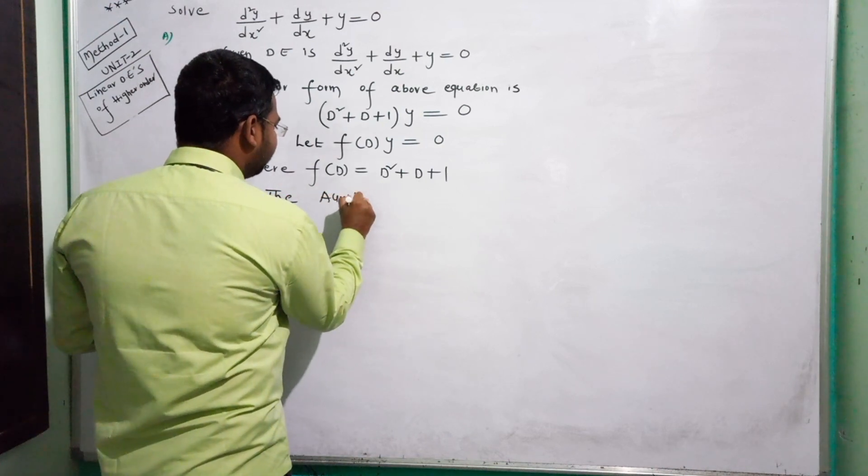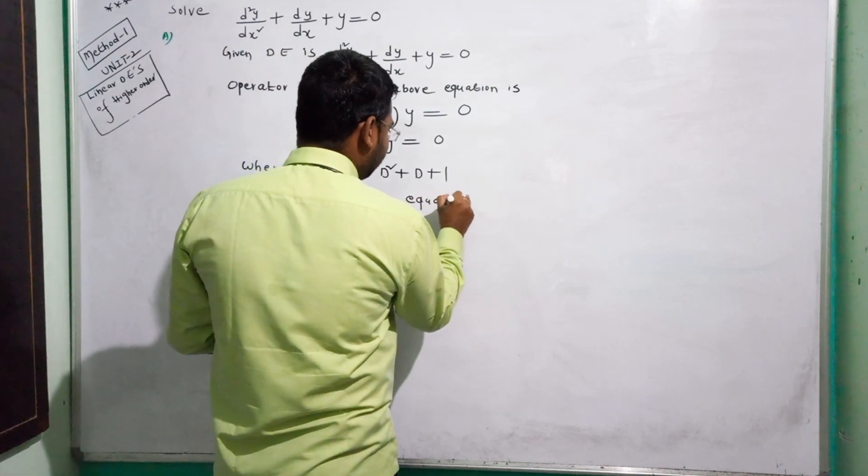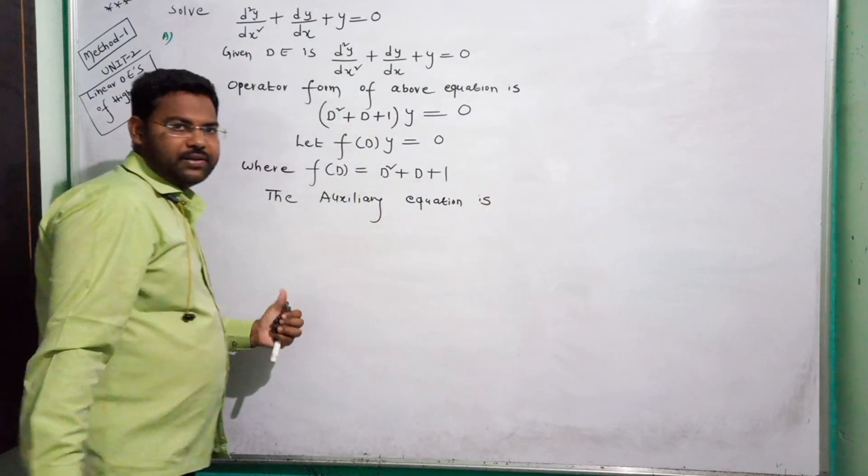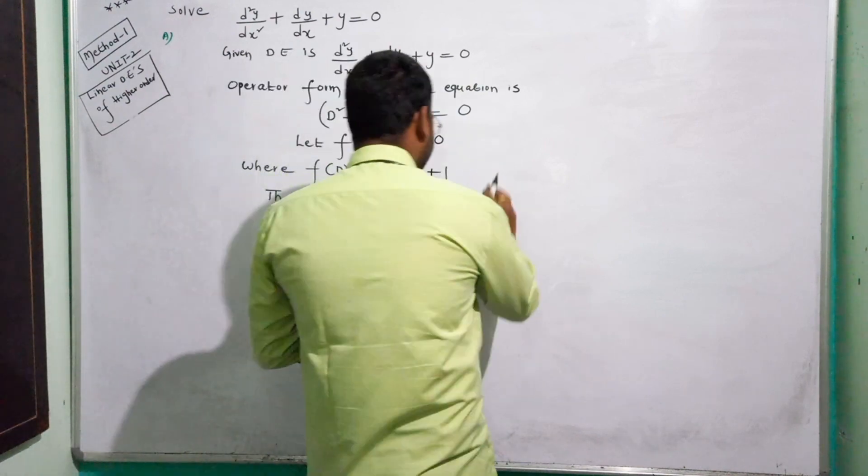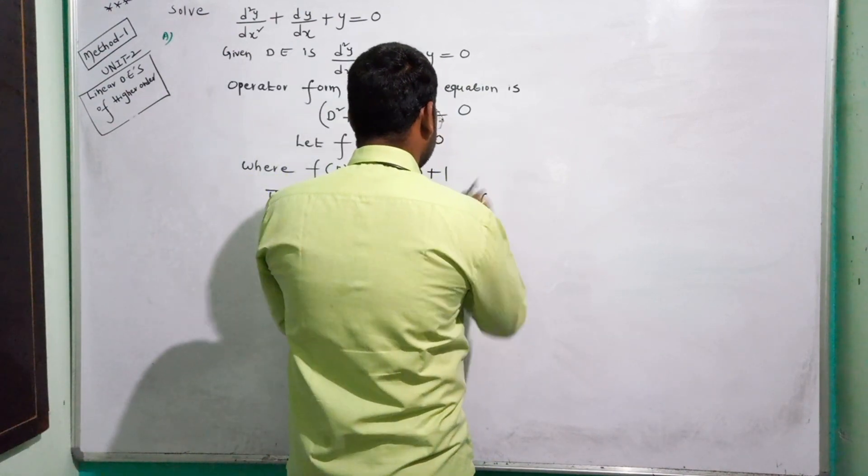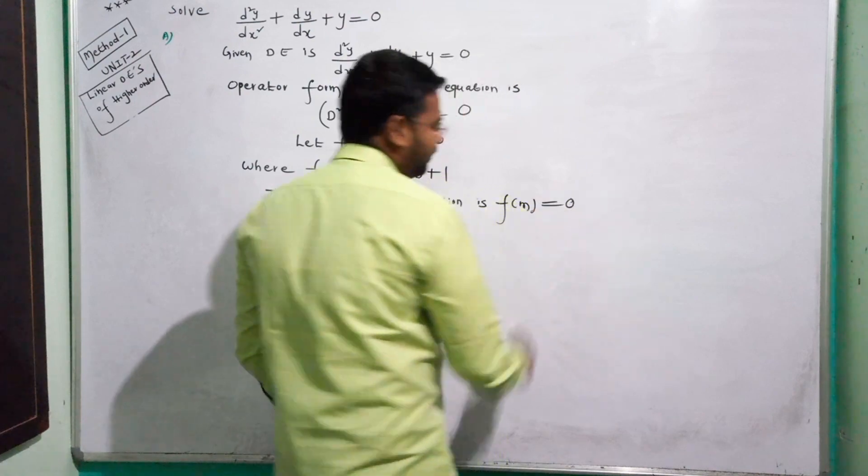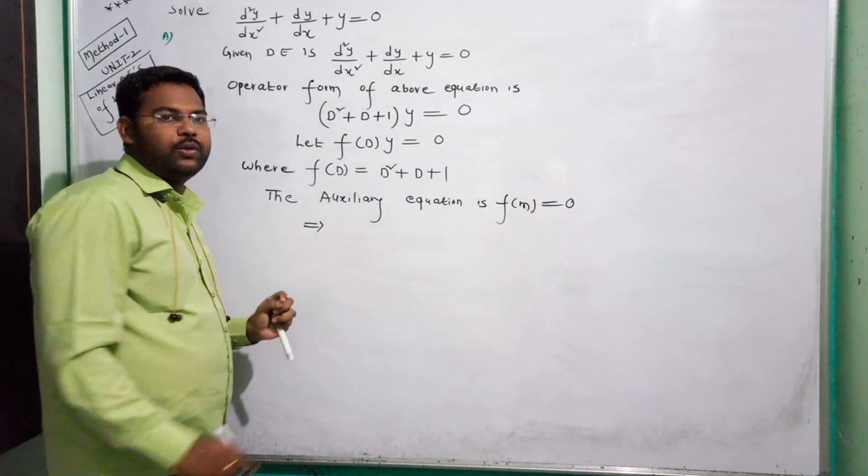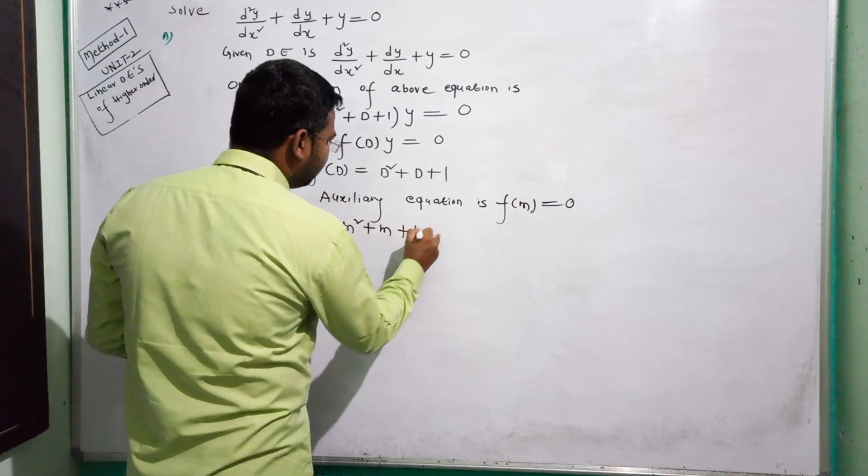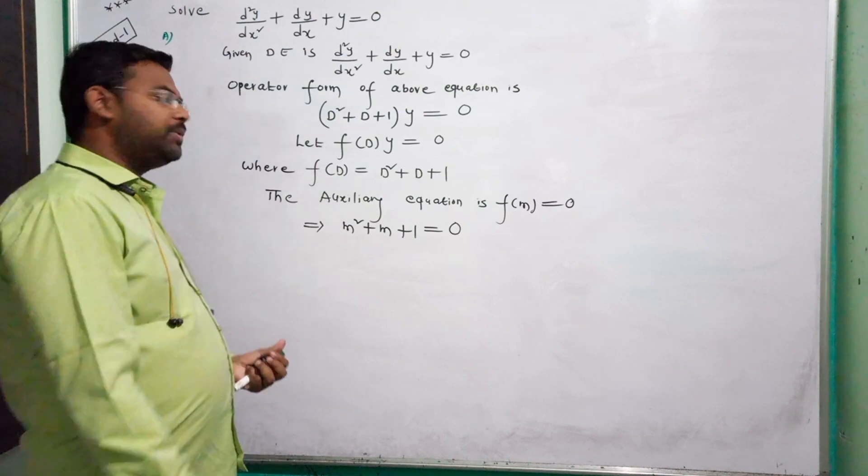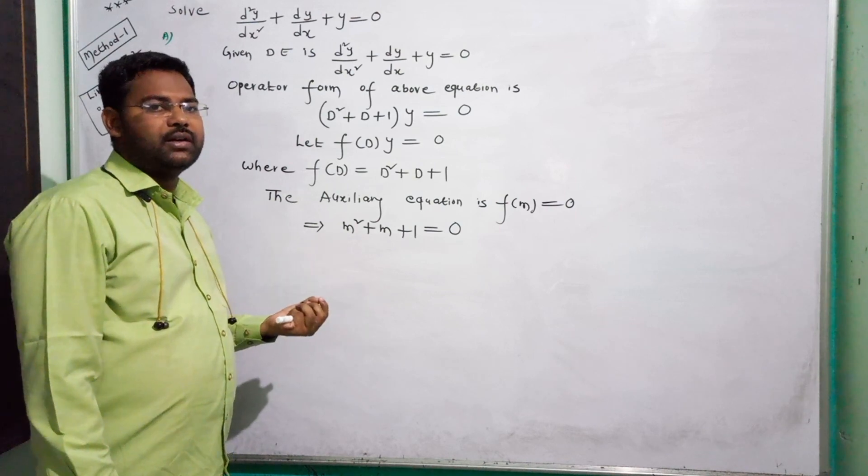The auxiliary equation is: substitute M in place of D. So F of M equals zero. M squared plus M plus 1 equals zero. Factors don't work, so use quadratic formula.